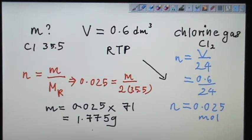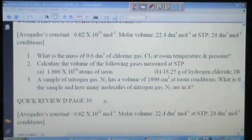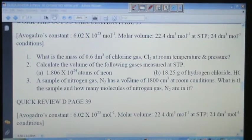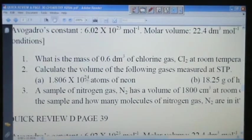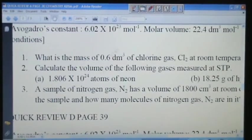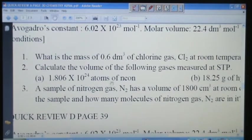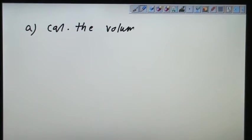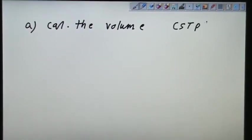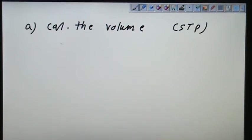So let's move on with question number two. Let's look at the page. Calculate the volume of the foreign gases measured at STP. They seem to be giving us the number of atoms of neon. Maybe I should rewrite the sentence again. Calculate the volume of foreign gases measured at STP. So the first gas is neon gas.